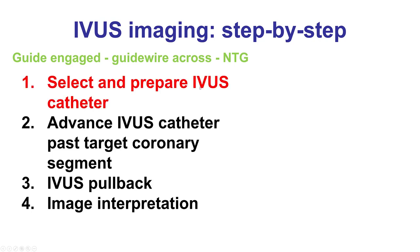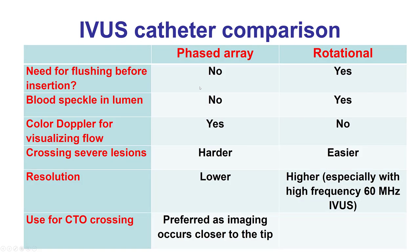The first step is to select and prepare the intravascular ultrasound catheter. There are two main categories: the phased array catheter, the Eagle Eye, and the rotational IVUS. The advantages of the Eagle Eye are that it is very fast and easy to use, and also provides color Doppler imaging for visualizing flow. However, the disadvantages are that it is harder to advance across more severe lesions and has lower resolution compared with the rotational IVUS catheters. When it comes to CTO crossing, the phased array is preferred, especially the short tip catheter, since the imaging is closer to the tip.